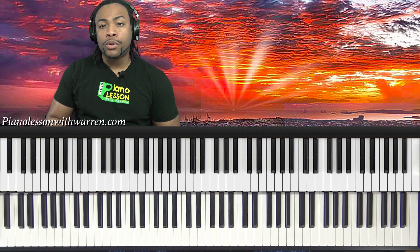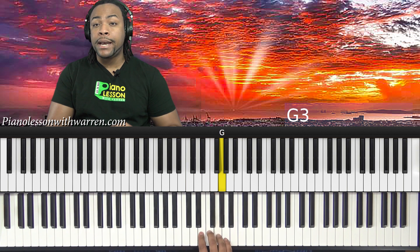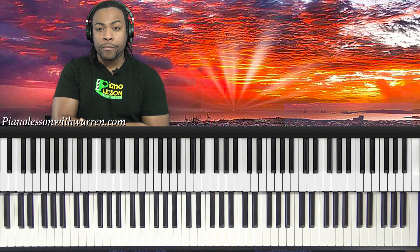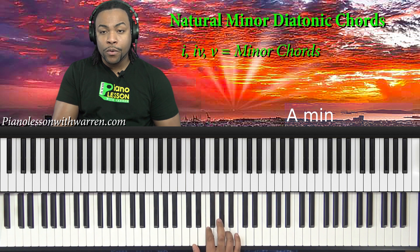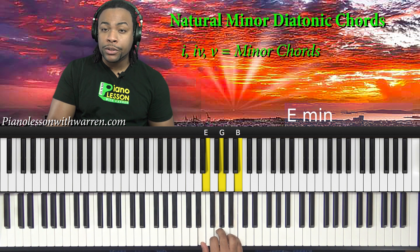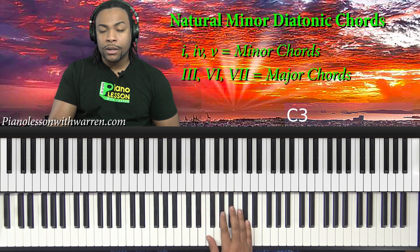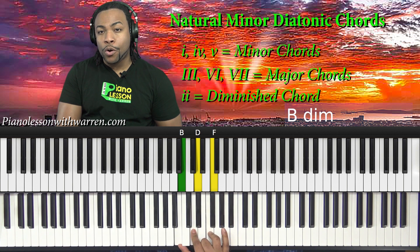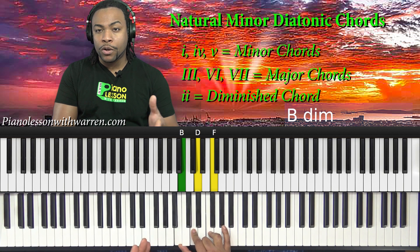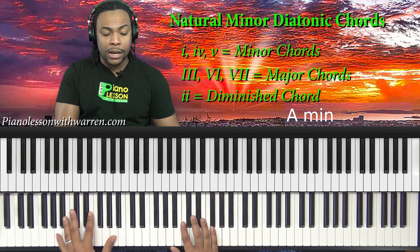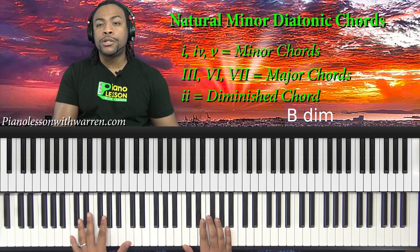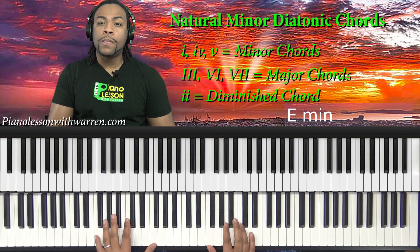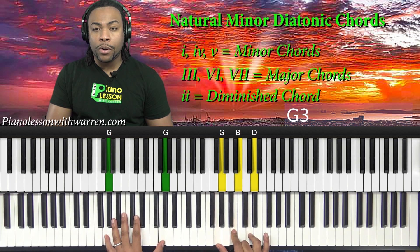If we jump to the relative minor — A natural minor — we have the reverse of that major chord makeup. The one chord, the four chord, and the five chord are minors. The three chord, the sixth chord, and the seventh chord are majors. And we have the two chord, which is diminished. So: one chord minor, two chord diminished, three chord major, four chord minor, five chord minor, six chord major, and seventh chord major.